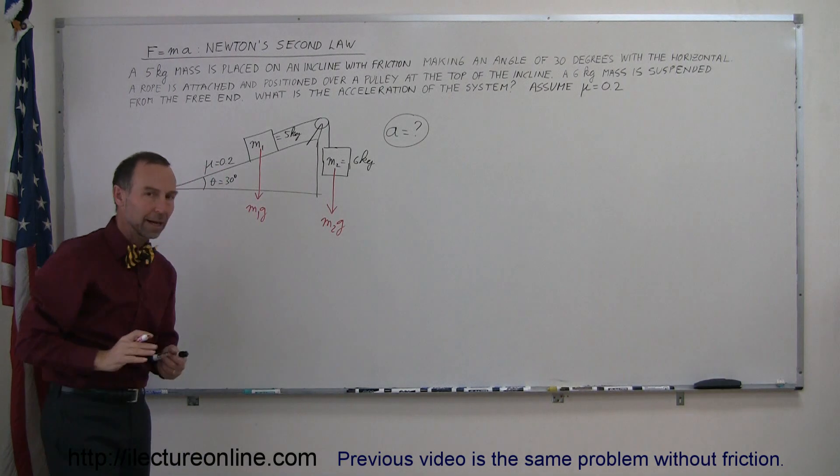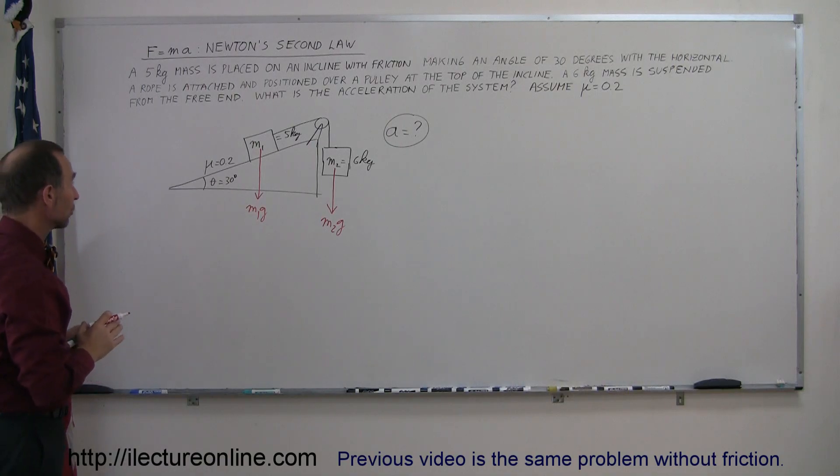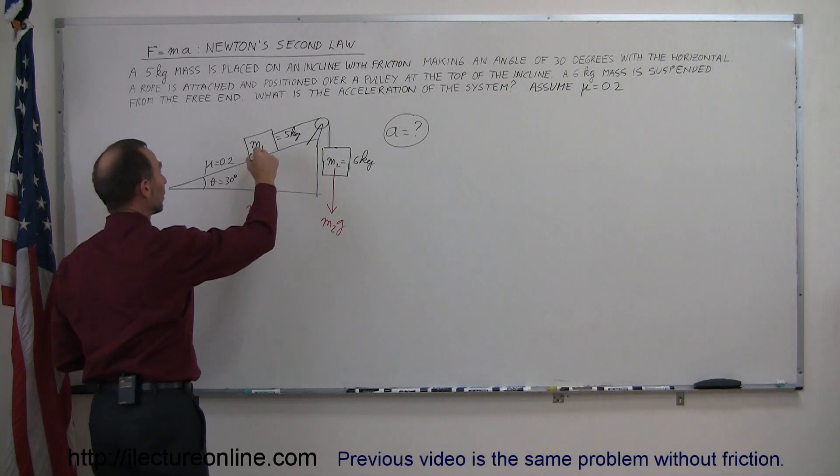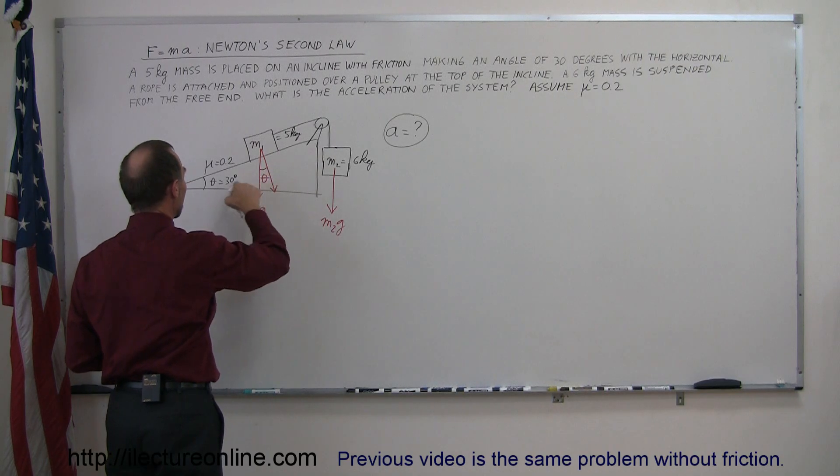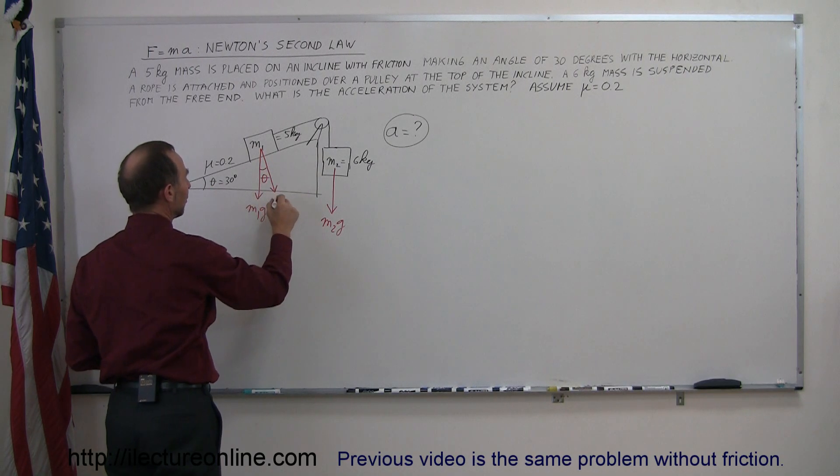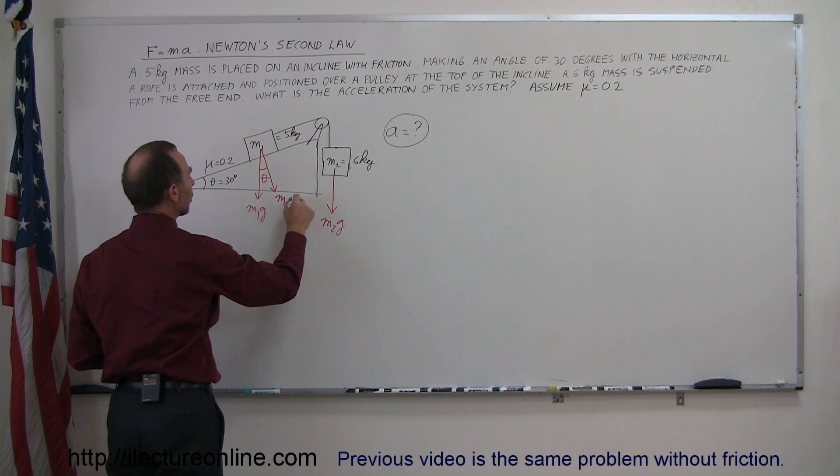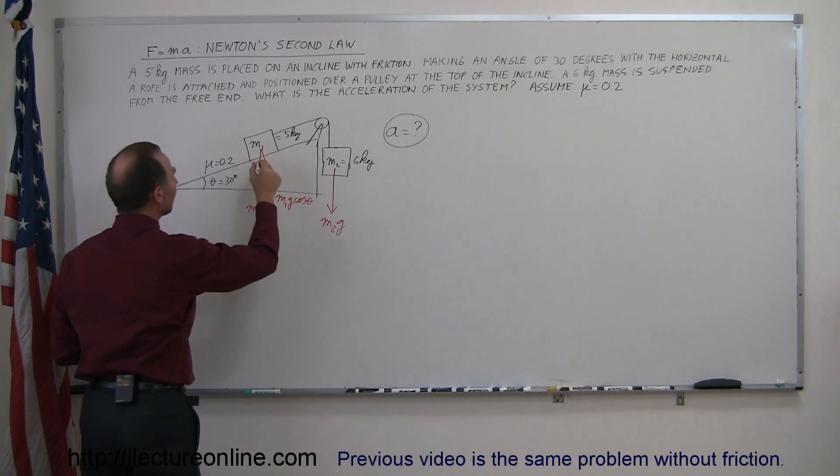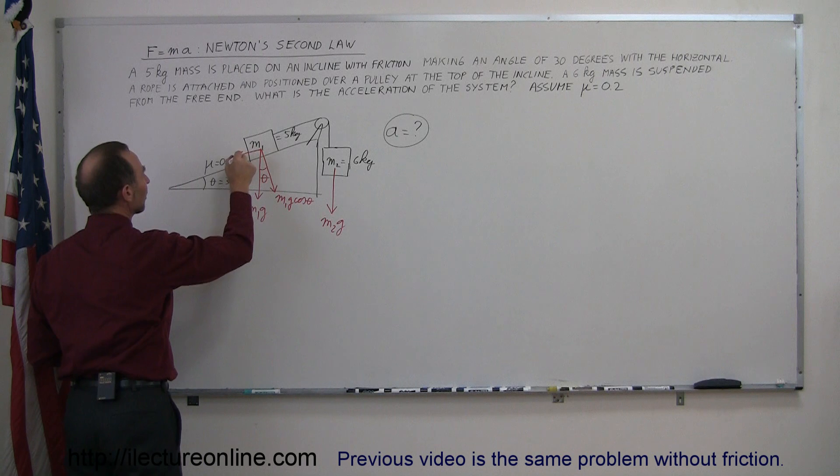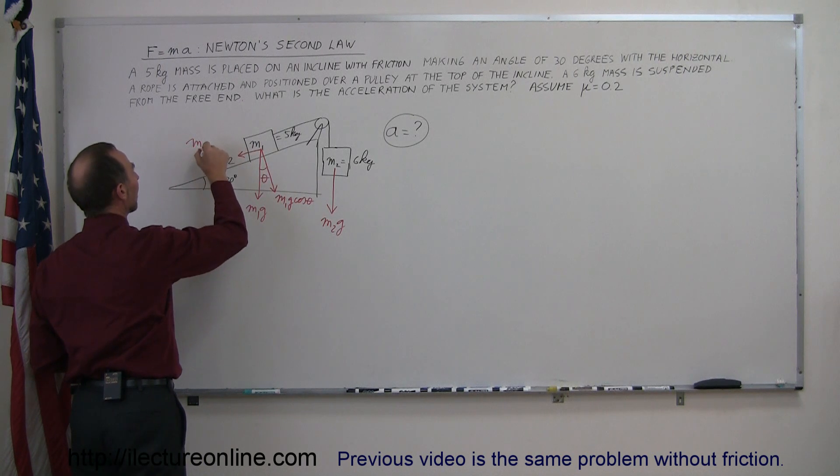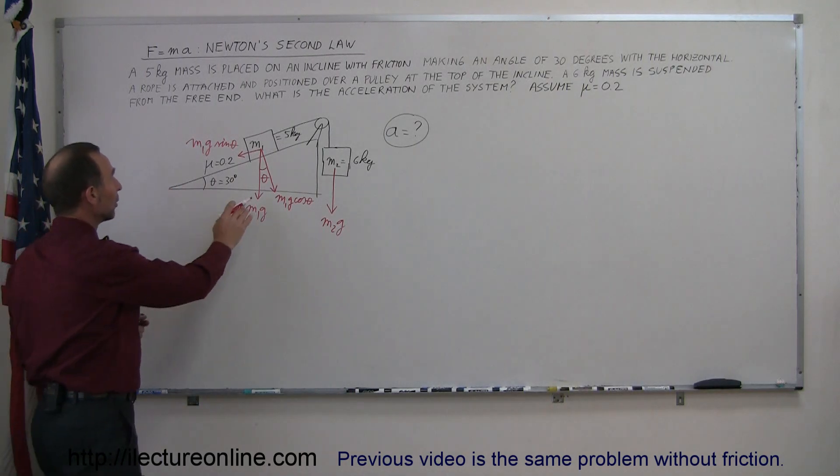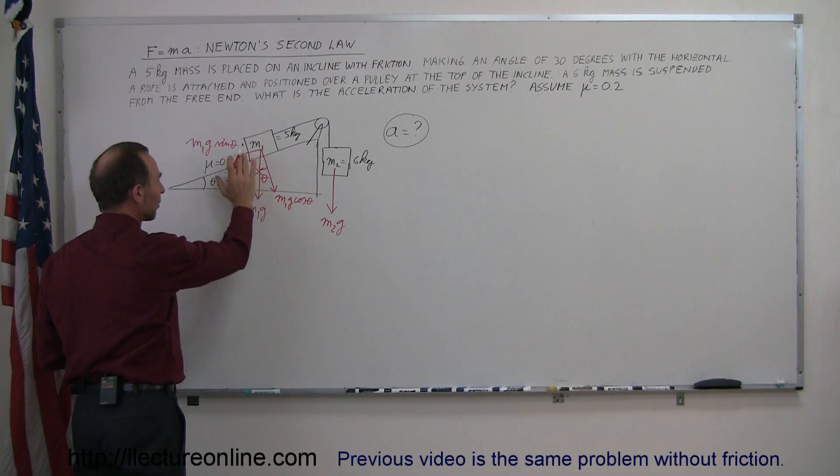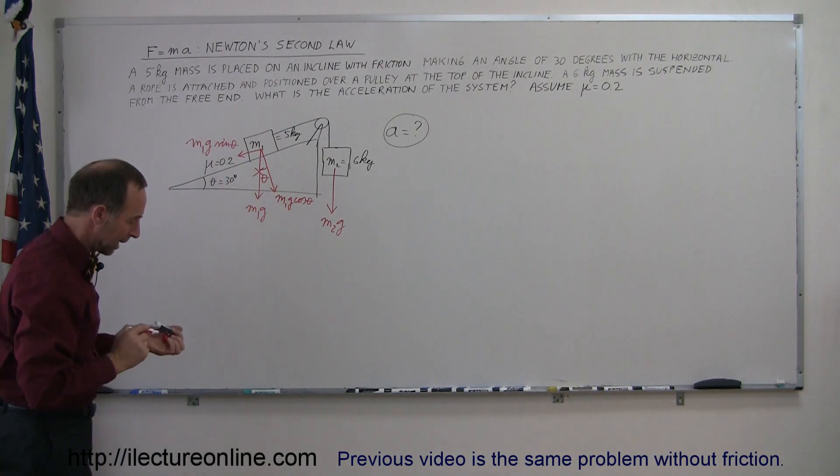Since it's on an incline we're going to write the two components of that force, the one component which is perpendicular to the incline. Since this angle is theta, being the same angle as this angle theta right there, this becomes m1g cosine of theta. And then the component that's parallel to the incline becomes m1g sine of theta. That causes the m1g to effectively disappear, we've replaced it by its two components.